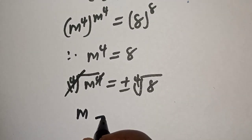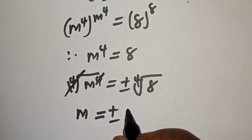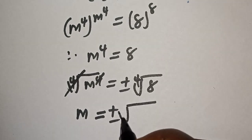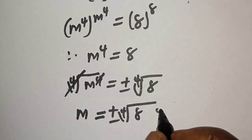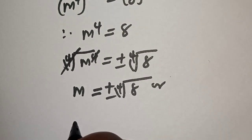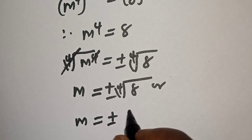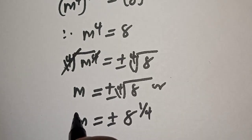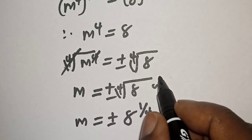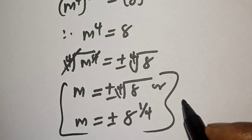m will be equal to plus or minus the fourth root of 8, or m is equal to plus or minus 8 raised to power 1 over 4. This is the final answer.